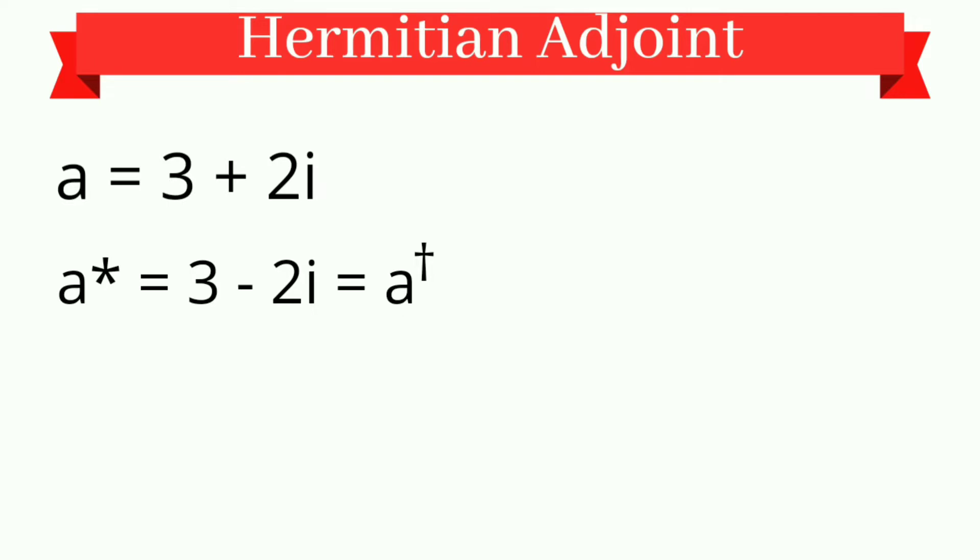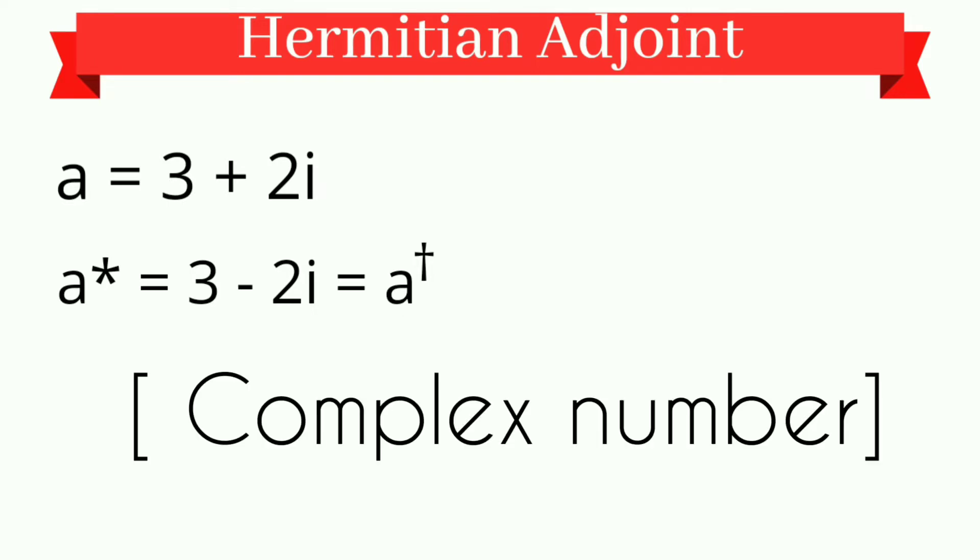So its adjoint would be A star equals 3 minus 2 iota, which equals A dagger. That is, its adjoint. So this was in case of complex numbers.